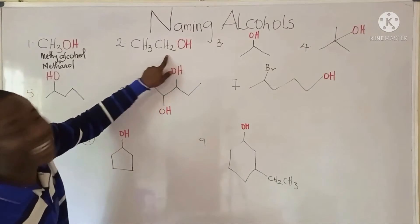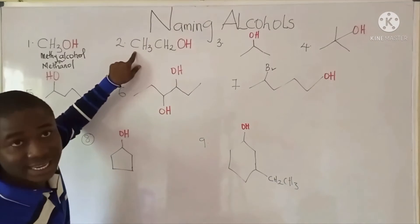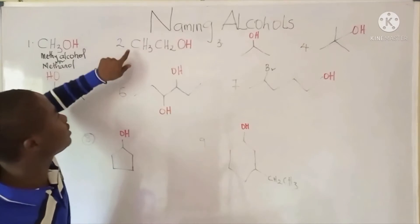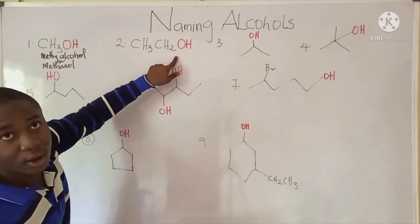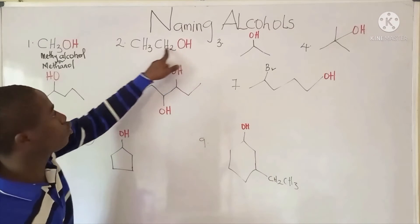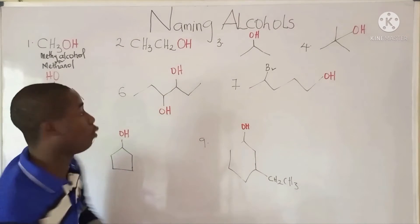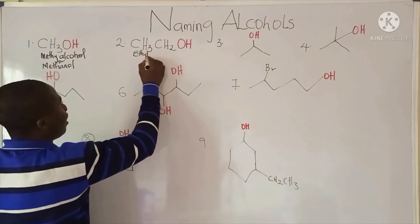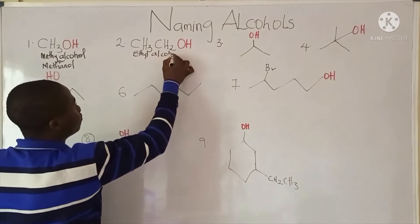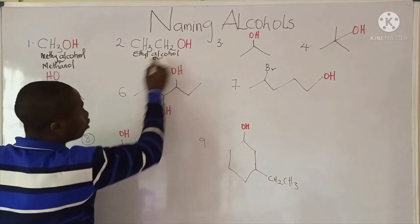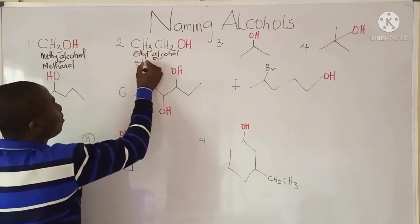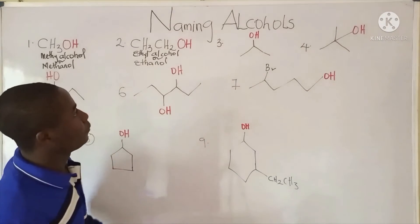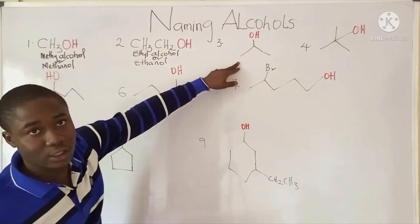This is an ethyl group, which is the CH3CH2 group. So this is an ethyl group, or C2H5, attached to the alcohol. So it is called ethyl alcohol, also called ethanol. Now, moving over to the next question.